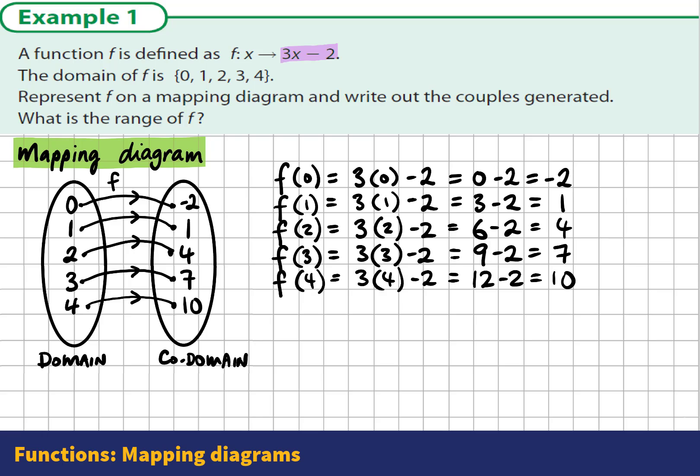The second part of the question is asking us to write out the list of couples that are generated. The couples are a list of inputs with the outputs. When we're writing the couples, we use these round brackets.